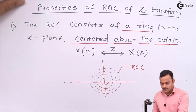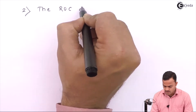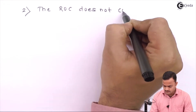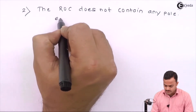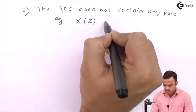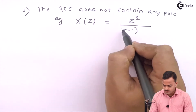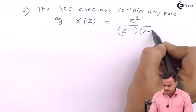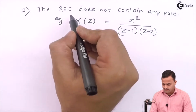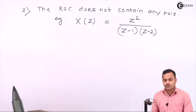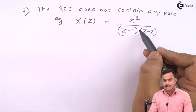Property number 2: the ROC does not contain any pole. To illustrate this, we take a simple example: X(Z) = Z² / [(Z−1)(Z−2)], which is the Z-transform of some random function x(n). We need to find those values of Z for which this X(Z) exists finitely.